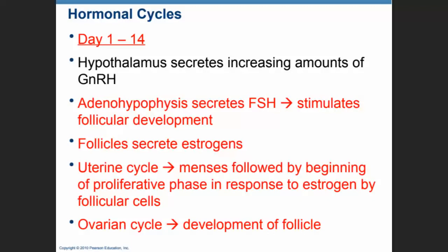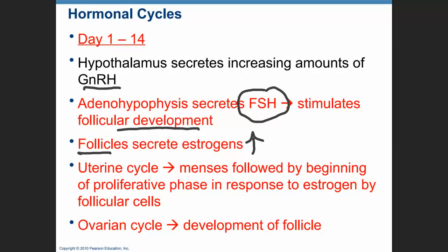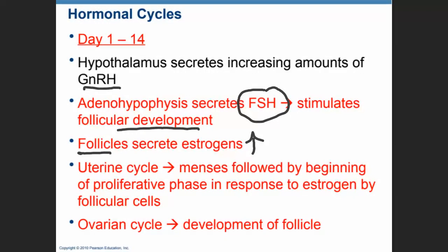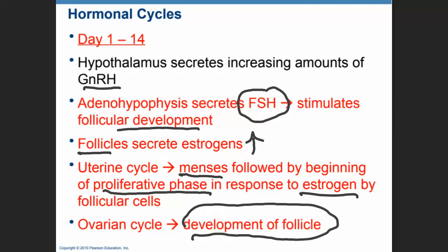Days one through fourteen is when the hypothalamus is secreting the gonadotropic releasing hormones that are going to cause the secretion of FSH, which stimulates follicular development. The follicular cells will then begin to secrete progressively higher levels of estrogen and progesterone. Estrogen and progesterone also initiate menses and the beginning of the proliferative phase. This is the follicular development phase of the ovarian cycle.